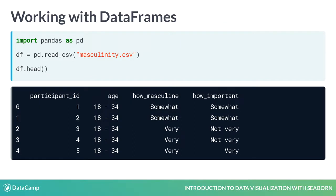This dataset contains the result of a survey of adult men. We can see that it has four columns: Participant ID, Age, How Masculine — which is that person's response to the question 'How Masculine or Manly do you feel?' — and How Important, which is the response to the question 'How important is it to you that others see you as masculine?'